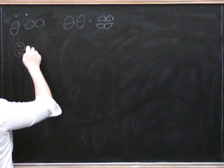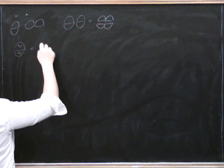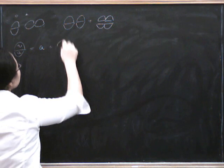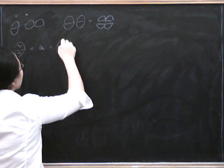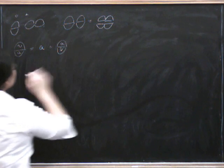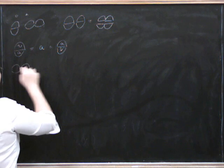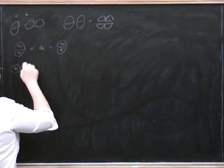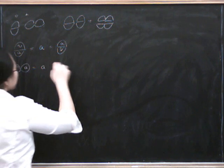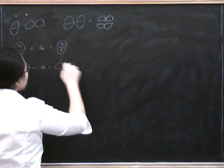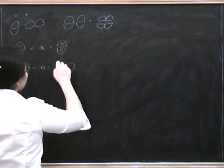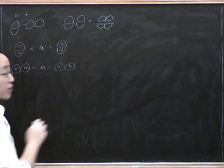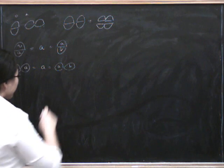so V vertically composed with A in either direction is A, and if we say H is the horizontal unit, then H horizontally composed with A on either side is A.